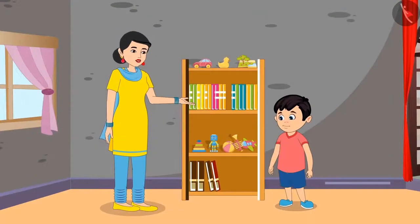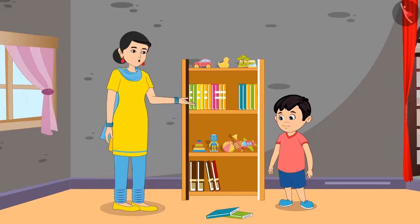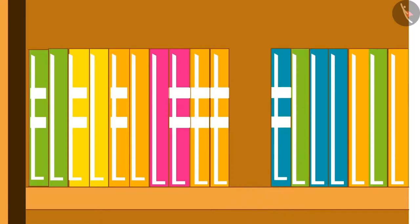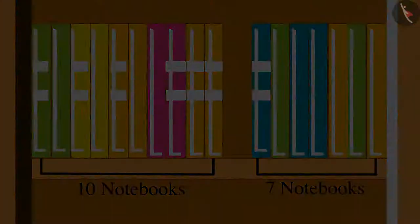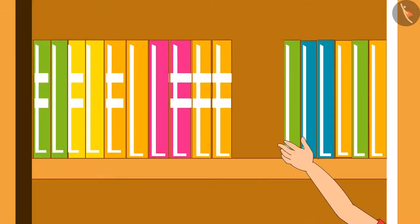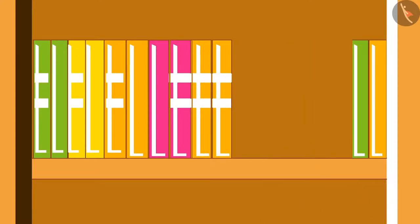Mother tells Chonu, 'Tomorrow is the first day of your new class. So today you must separate all your used notebooks and new notebooks.' Chonu says, 'Yes mummy.' Mother guides him, 'First of all count all your notebooks.' Chonu counts and finds he has 17 notebooks. Mother says, 'Now separate those notebooks which are used.' Chonu counts: one, two, three, four, five — five notebooks are used.